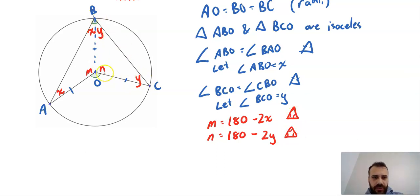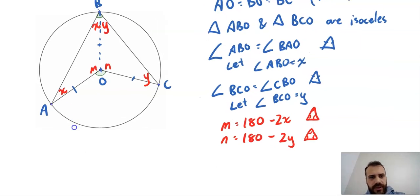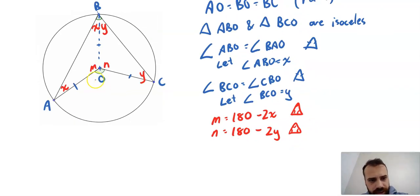All of that would have to add up to 180, so that must be 180 minus 2Y. All of this would have to add up to 180, so M equals 180 minus 2X. I'm going to add one more angle here - I'm going to call this angle Q.